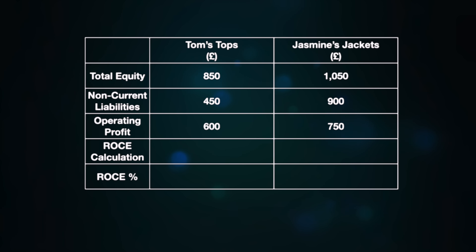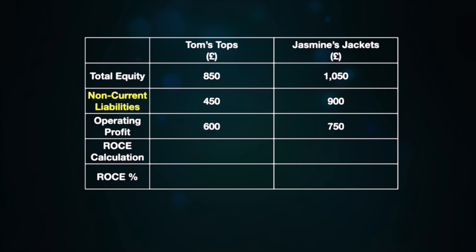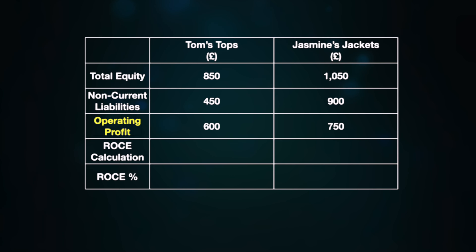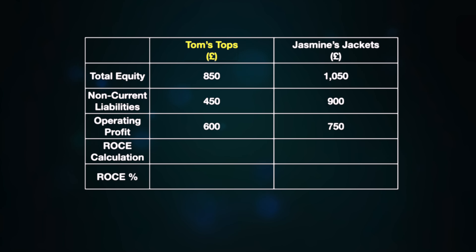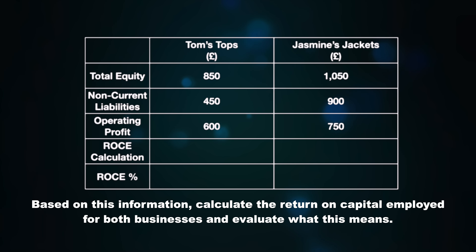Either way, you will find the profit figure you need for the calculation in the income statement of the business. But if the capital employed figure is not given to you in the scenario, you may need to do a quick calculation first. To calculate capital employed, you need to add together the business's total equity and its non-current liabilities, all of which can be found in the statement of financial position.